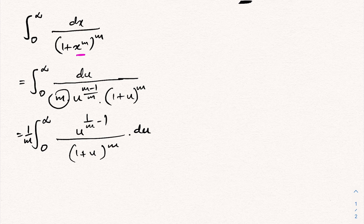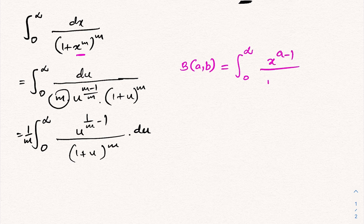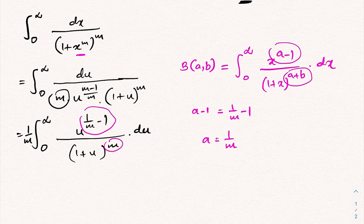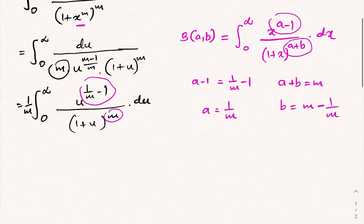We now recognize the beta function: β(a, b) = integral from zero to infinity of x^(a−1) / (1 + x)^(a+b) dx. Comparing, a − 1 = 1/m so a = 1/m. Then a + b = m, giving b = m − 1/m.